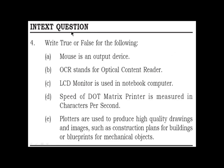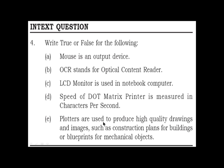In-text question 4: Write True or False for the following. A. Mouse is an output device. B. OCR stands for Optical Content Reader. C. LCD monitor is used in notebook computers. D. Speed of dot matrix printer is measured in characters per second. E. Plotters are used to produce high quality drawings and images, such as construction plans for buildings or blueprints for mechanical objects.